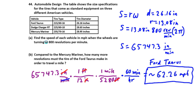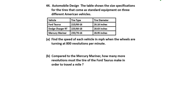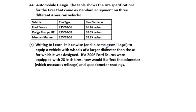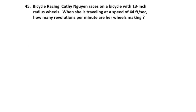Those are practical uses of arc length. You can go on to find the speeds for the Dodge Charger and Mercury Mariner and make comparisons to see how a change in tire diameter affects the odometer and speed. Problem 45: bicycle racing. Nick Kathleen rides a bicycle with 13-inch radius wheels. When she's traveling at a speed of 44 feet per second, how many revolutions per minute are her wheels making?